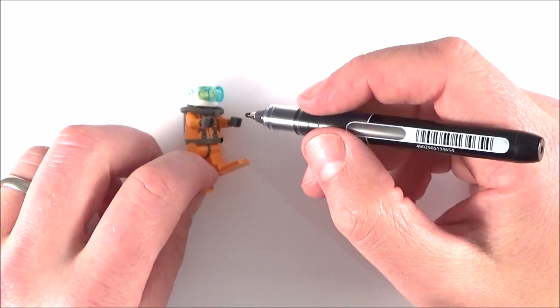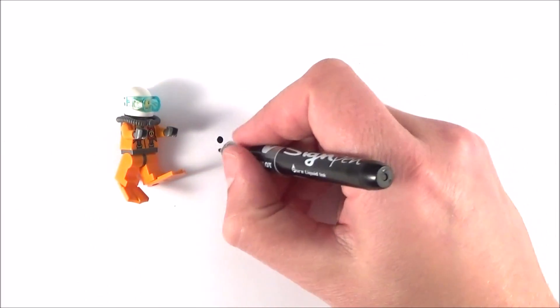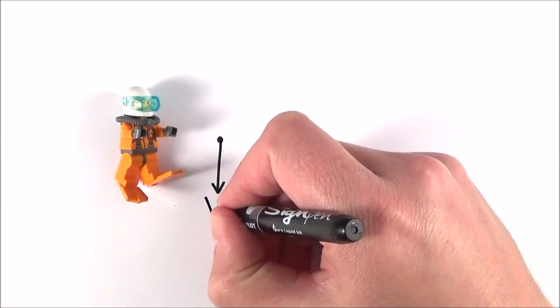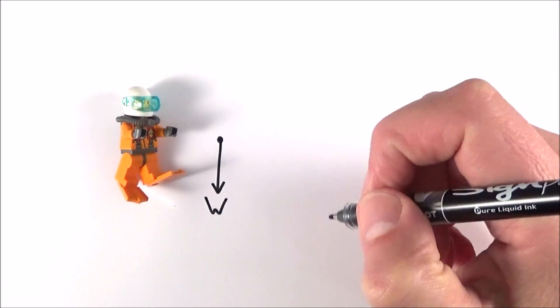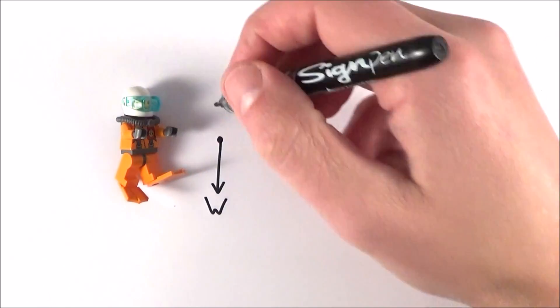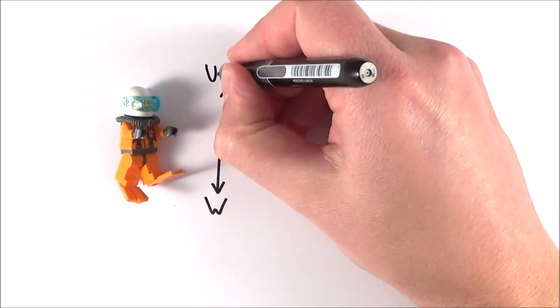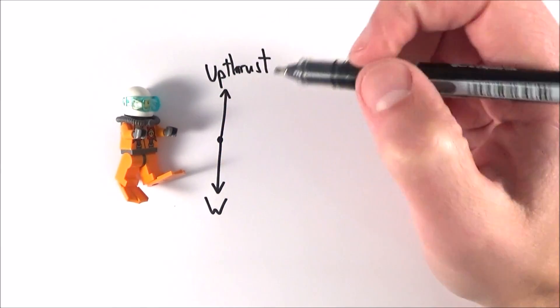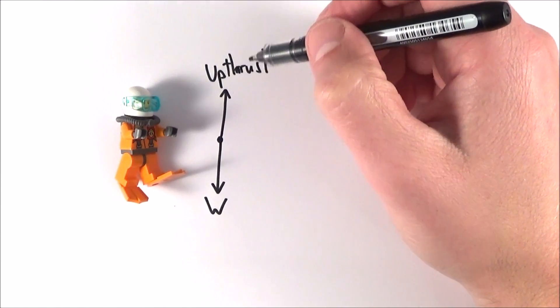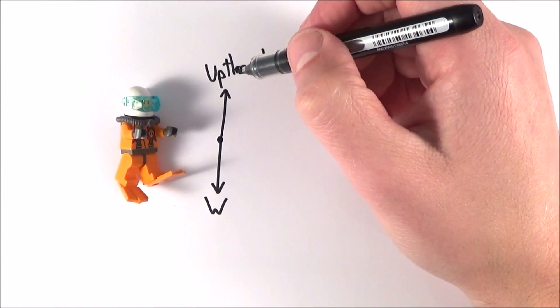We can look at maybe a free body diagram to look at the forces acting upon them. The force which is acting downwards is equal to weight, but there's also going to be a force which is acting in the upwards direction, the thing that stops them from sinking. It's this force here that we call upthrust. This video explains a bit more about this force called upthrust and Archimedes principle.